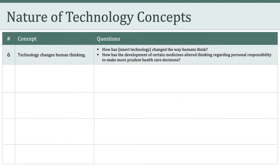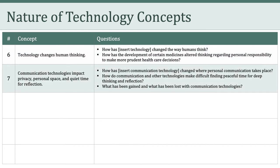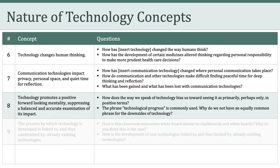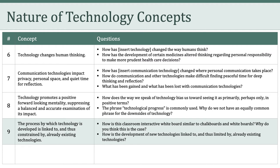The sixth concept is that technology changes human thinking — how has a given technology changed the way humans think? Concept seven: communication technologies impact privacy, personal space, and quiet time for reflection. We can ask what has been gained and what has been lost with communication technologies. The eighth concept is that technology promotes a positive, forward-looking mentality that suppresses a balanced and accurate examination of its actual impact. The phrase 'technological progress' is commonly used — why do we not have an equally common phrase for the downsides of technology? Concept nine: the process by which technology is developed is linked to, and thus constrained by, already existing technologies.